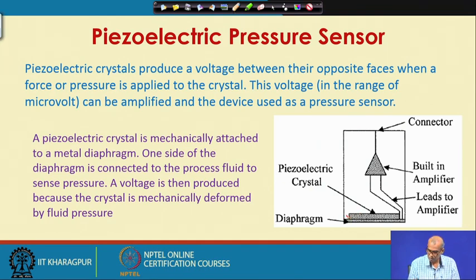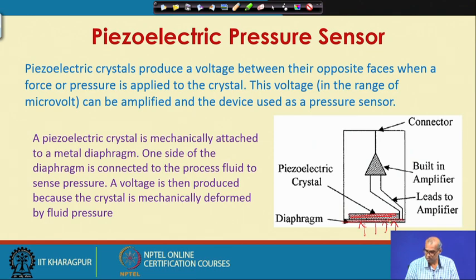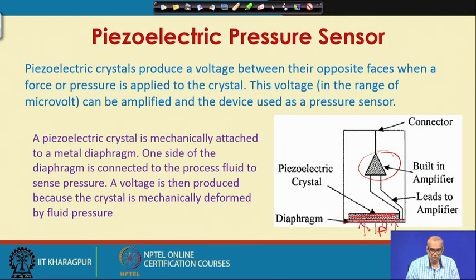Look at the schematic. This is the piezoelectric crystal and this is the diaphragm — the piezoelectric crystal is attached to the diaphragm. We apply pressure here; the diaphragm receives the pressure and converts it to a force. The piezoelectric crystal is now under force, there will be deformation and surface charge accumulated. A voltage will be developed which can be amplified using a built-in amplifier. The piezoelectric crystal is mechanically attached to a metal diaphragm; one side of the diaphragm is connected to the process fluid to sense pressure, and a voltage is produced because the crystal is mechanically deformed by fluid pressure.